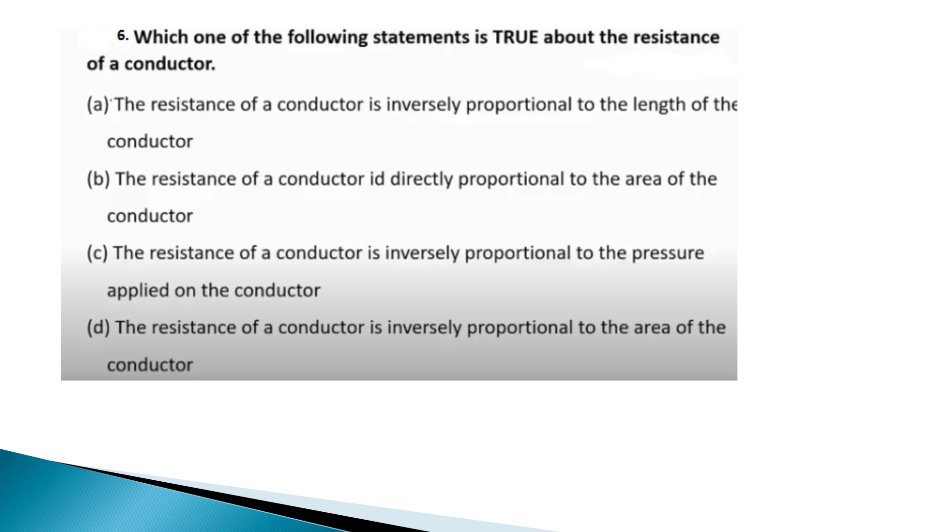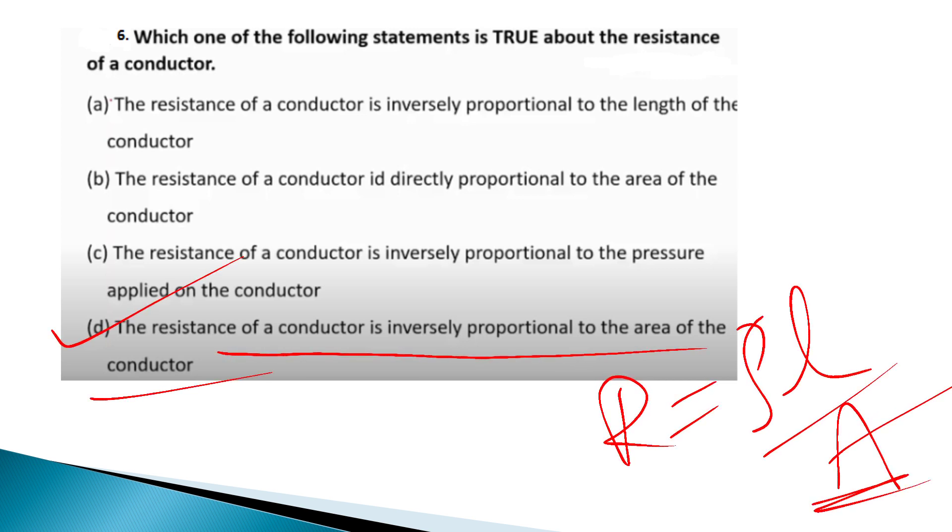Which one of the following statement is true about the resistance of a conductor? The resistance of a conductor is inversely proportional to area of conductor. R equals rho L by A. The answer is option D, resistance of a conductor inversely proportional to area of the conductor.